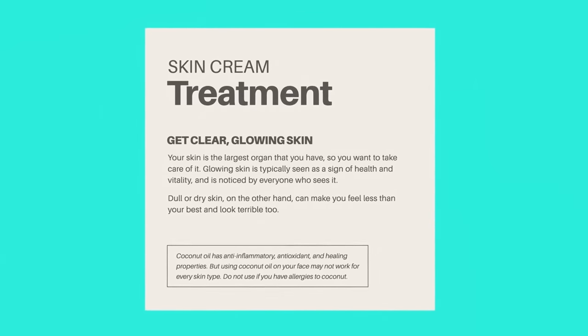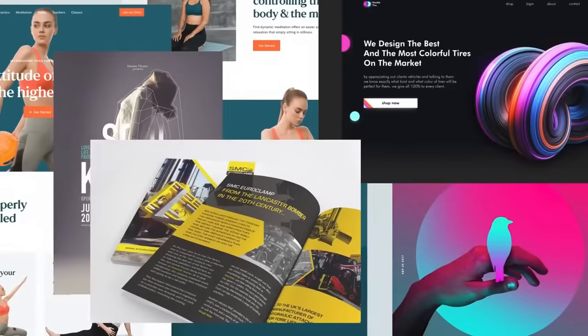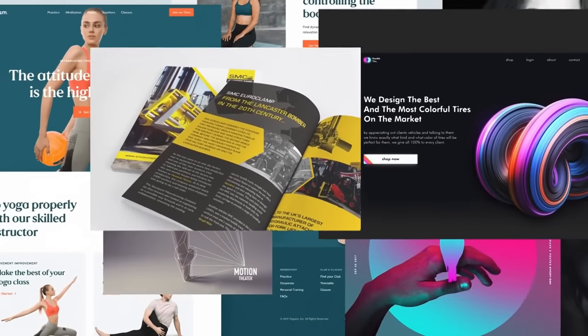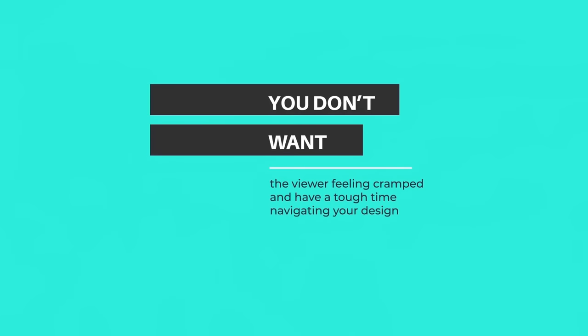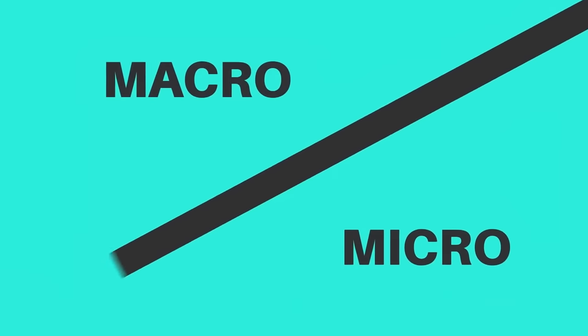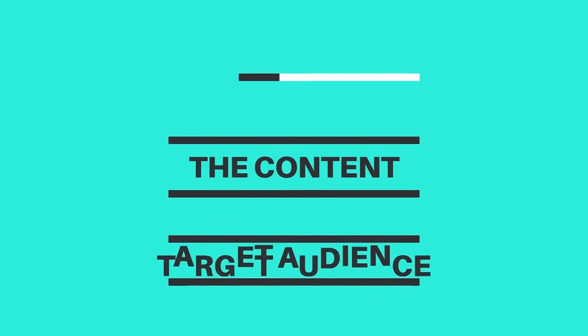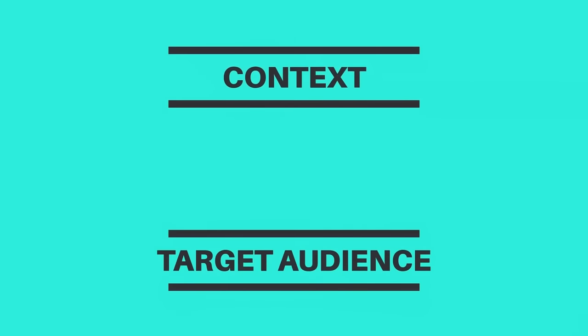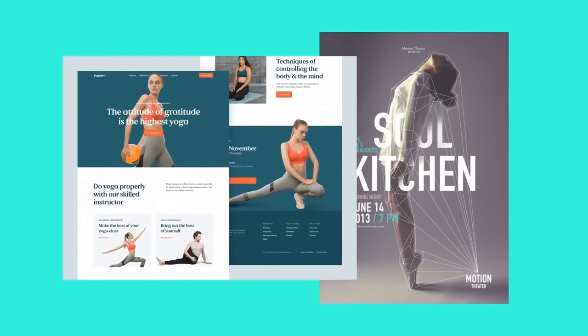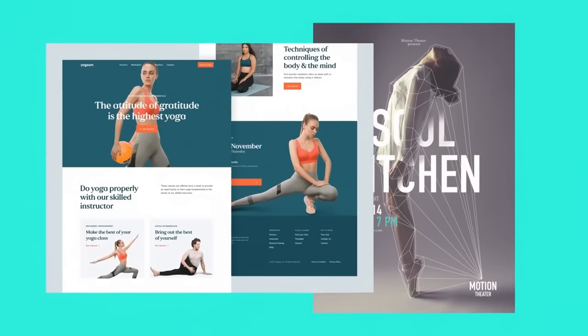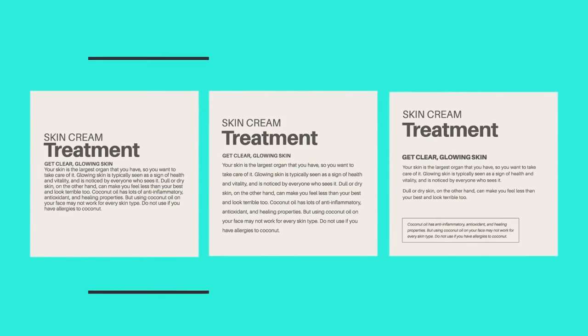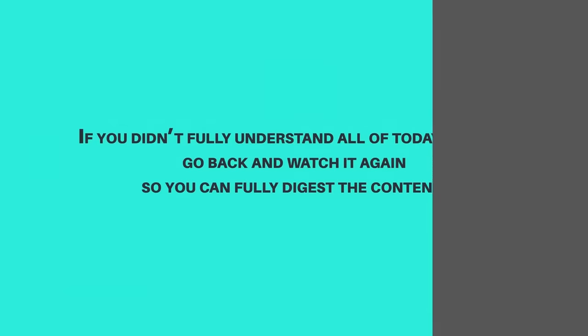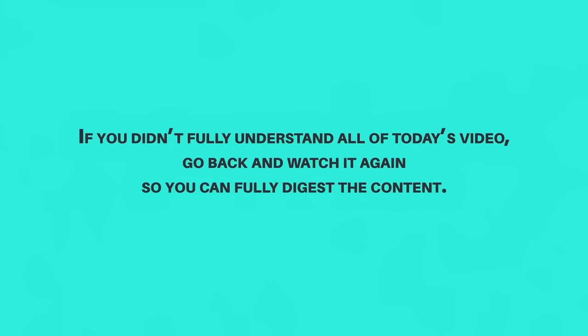Breaking content into digestible chunks helps the viewer move between each part of the design easily, ensuring they remain on your design for longer. To summarize: your design should always be legible, and you don't want the viewer to feel cramped. Consider the balance of micro and macro white space based on the message of your design, the content given by the client, the target audience, and the context of the design. Use space to enhance hierarchy, proximity, passive and active white spaces.